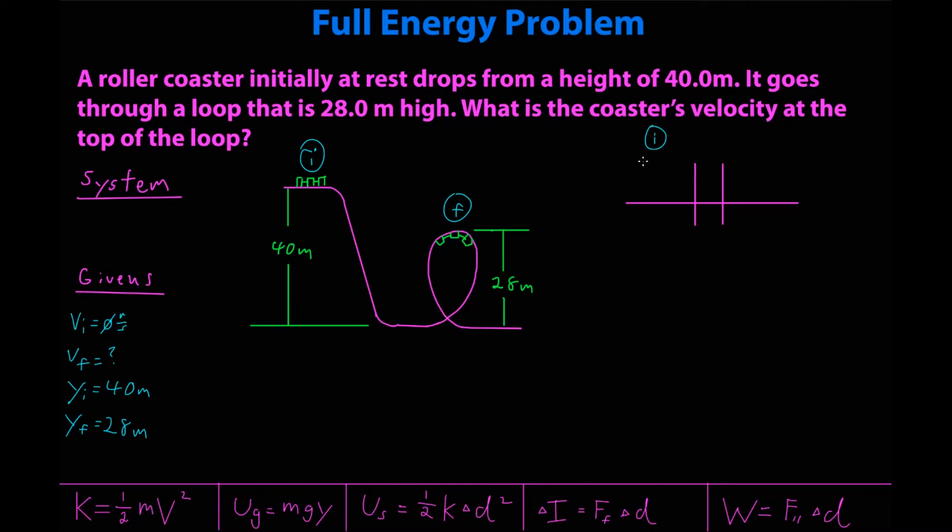For example, in my initial state I definitely have gravitational potential energy because the coaster is 40 meters off the ground. There's no velocities, no kinetic energy, and there's nothing elastic here. I have my work column and importantly my equal sign. Final state, the coaster is going through the loop so I definitely have gravitational potential energy but not as much as the initial state. And I have kinetic energy final because the cart has a velocity. So my bar graph would look something like this. Now these bar heights do not have to be perfect but they should give a rough estimate of the fact that I had a lot more gravitational potential energy in the initial than the final. In fact, some gravitational transferred to kinetic.